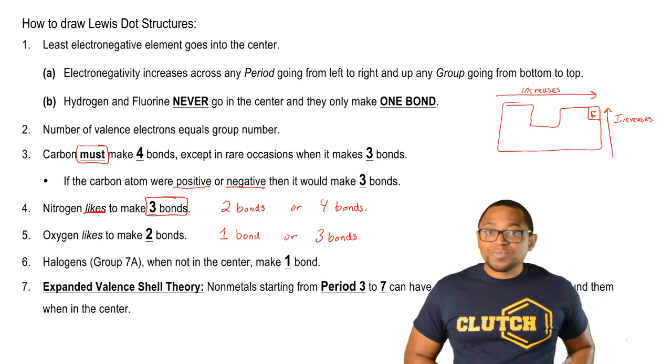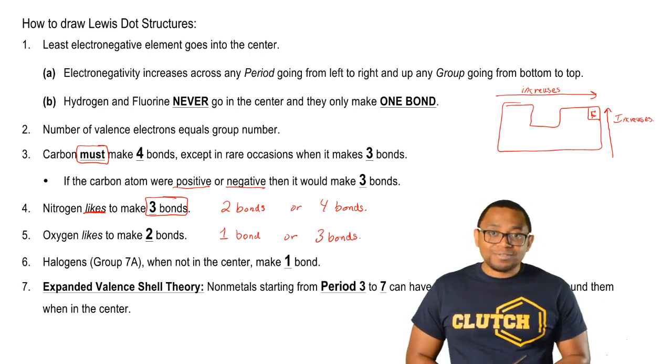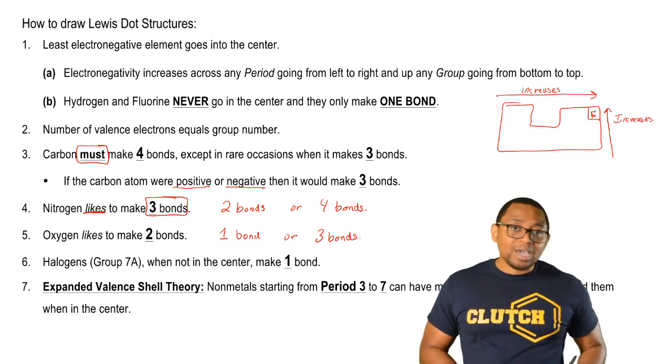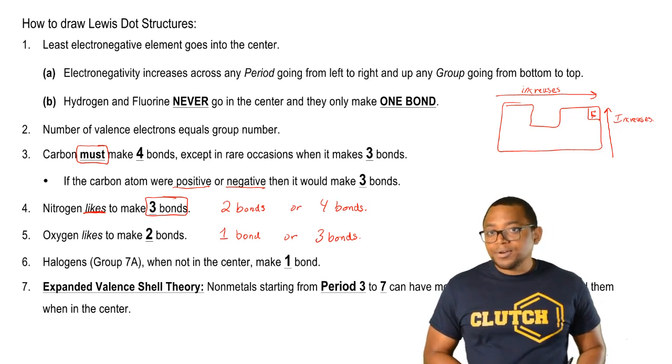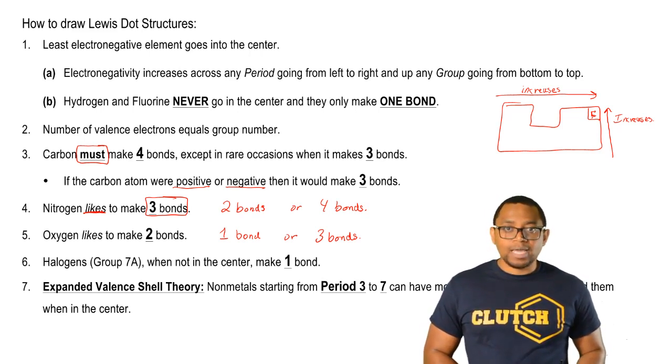Now halogens, which are in group 7A, when not in the center, so if they're a surrounding element, they only make one bond. Fluorine, of course, will never go in the center, so of course it's always going to make one bond as a surrounding element.